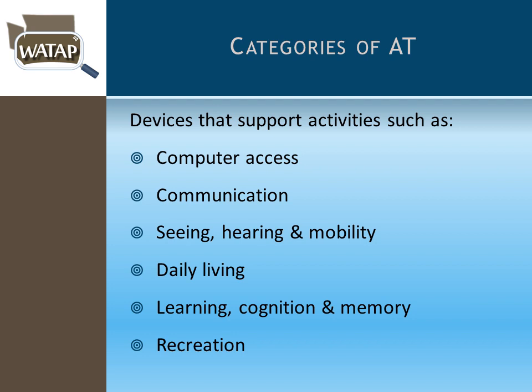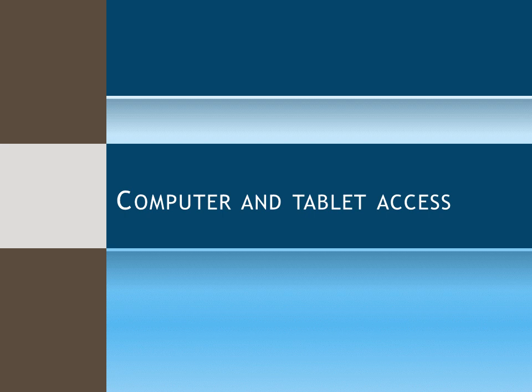The general categories we discuss for AT include computer access, communication, technology for visual and hearing loss, mobility, daily living, cognition, learning and memory, and recreation. For today's webinar I'll focus on computer access, communication — including how hearing loss affects communication — some vision technology, self-care and independent living, and learning and cognition. Recreation is important but will be addressed in another webinar.